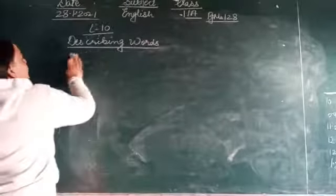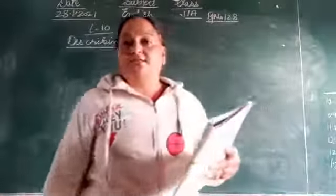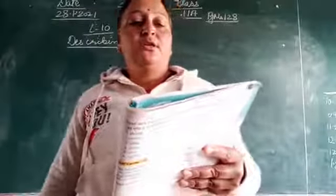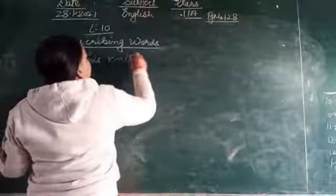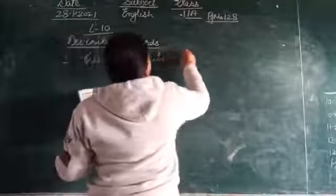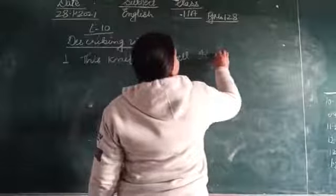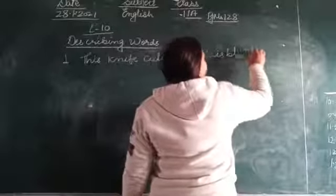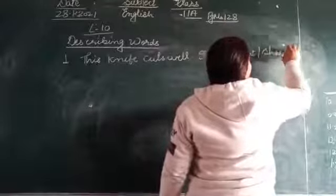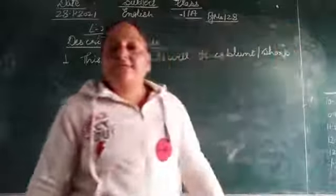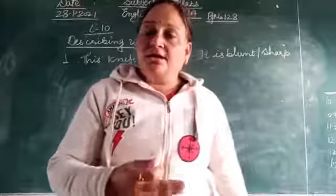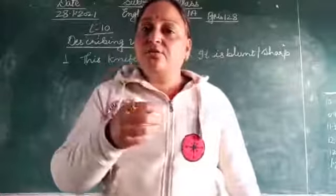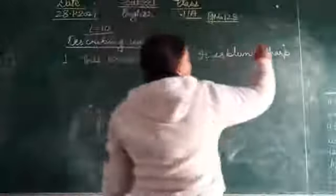Choose the right describing words in each sentence. Number 1: This knife cuts back. It is blunt or sharp? If a knife cuts well, it means sharp. Blunt means the edge is thick. So the answer is sharp.